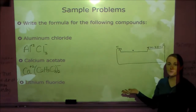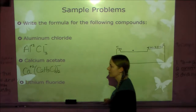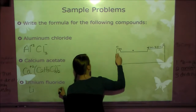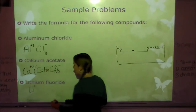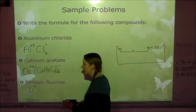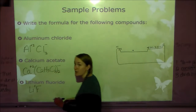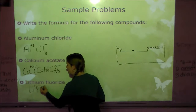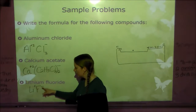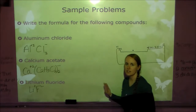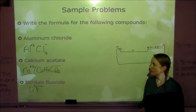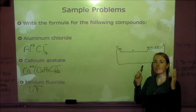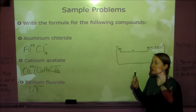Lithium fluoride: Li is in group 1 so it has a +1 charge. Fluoride is F in group 17 with a −1 charge. Since we have +1 and −1, do we need to cross? No — they already cancel out. It's just LiF. Remember, if you can remember to cross the charges, you're going to do great.